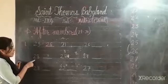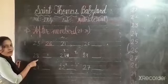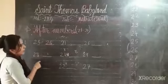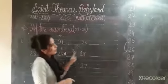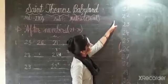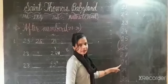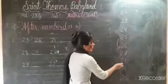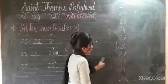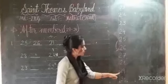Next one is 28. Can you say — after 28, what will come? 29.